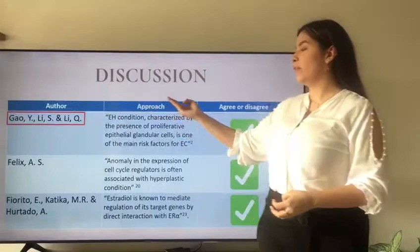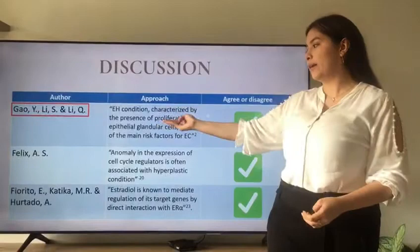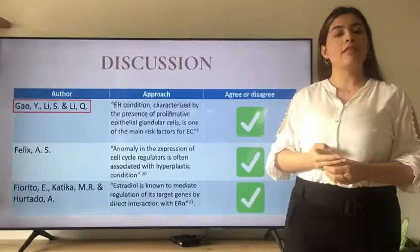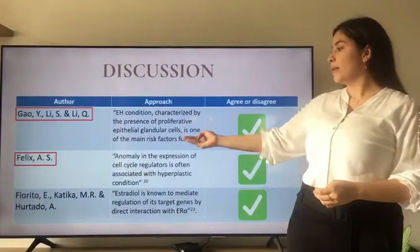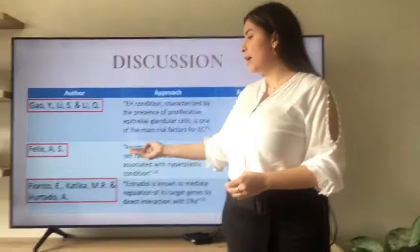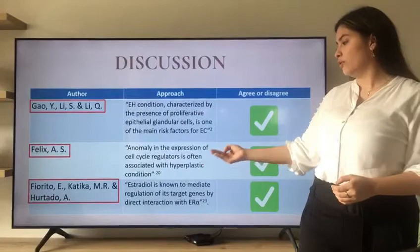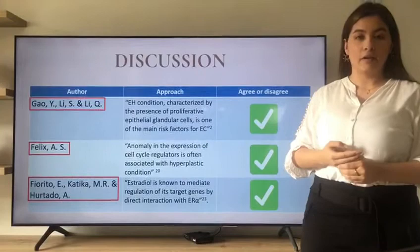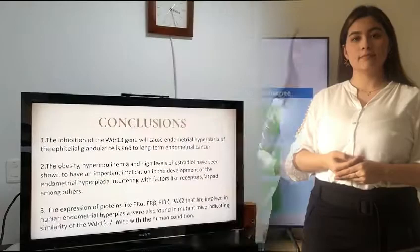Now, discussion. These authors propose that endometrial hyperplasia — characterized by the presence of proliferative epithelial glandular cells — is one of the main risk factors for endometrial cancer, and they agree with the rest of the literature. Felix proposed that abnormalities in the expression of cell cycle regulators are often associated with hyperplasia conditions, and they are in agreement. Finally, Fiorito, Catica, and Hurtado propose that estradiol mediates regulation of its target genes by direct interaction with ER alpha, and the authors also agree.